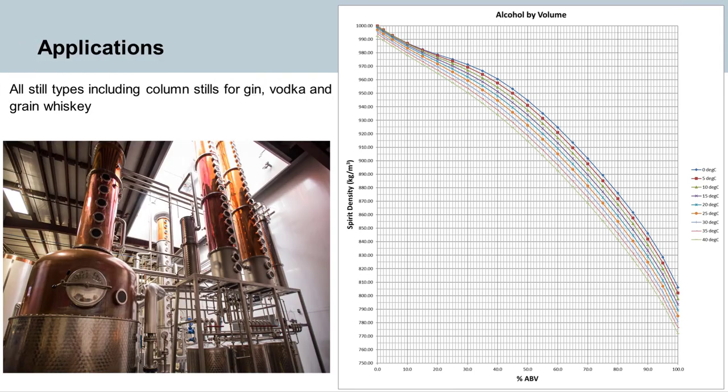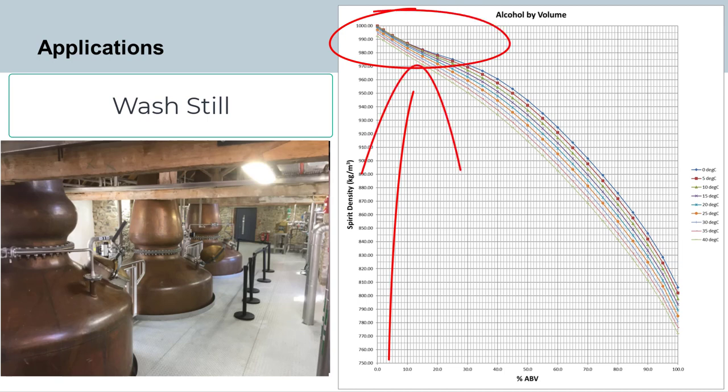If we plot these curves from the OIML table, you'll see that the actual curves across all the different temperature ranges change direction, which can cause a problem with the complexity of the formula behind this. For the wash still we need to be able to cut as low as 2 percent to get the tail, and that is in a very defined portion of the curve.